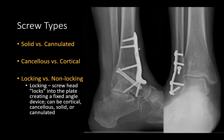A locking screw head actually locks into the plate, creating a fixed-angle device. It can be cortical, cancellous, solid, or cannulated. The locking screw acts as a secondary cortex — it only needs to cross one cortex because the plate itself acts like a cortex.